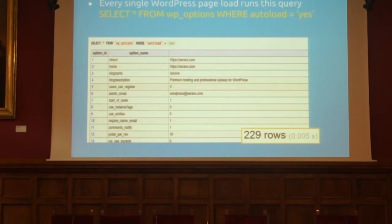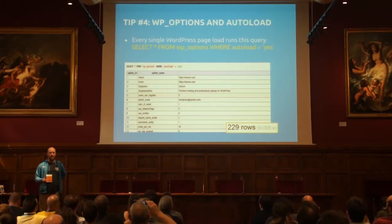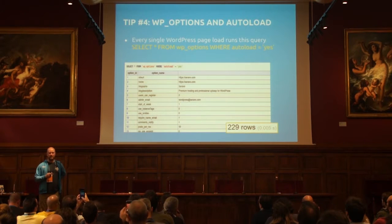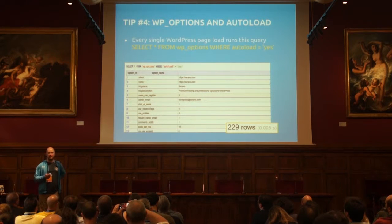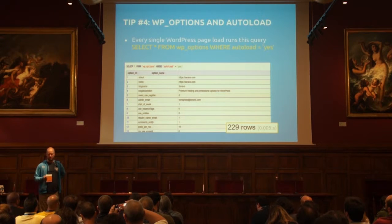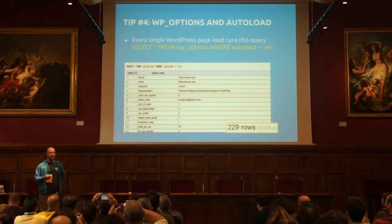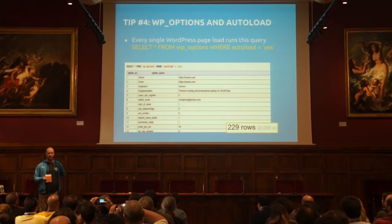Tip number four — this is something all WordPress developers should know. On every single WordPress page load, this query is made to the database: WordPress always fetches the options on every single page load. So if you have a slow site, you can check by manually running this SQL command in your database console to see how many rows it returns and how long it takes. If the result is very big or slow, that's going to slow down every single page load of WordPress.